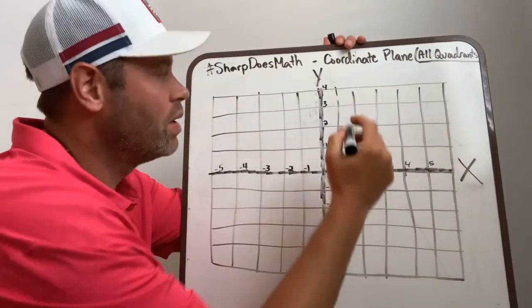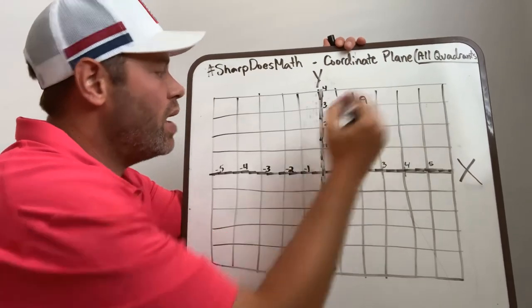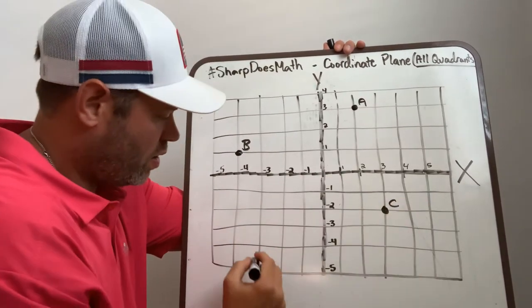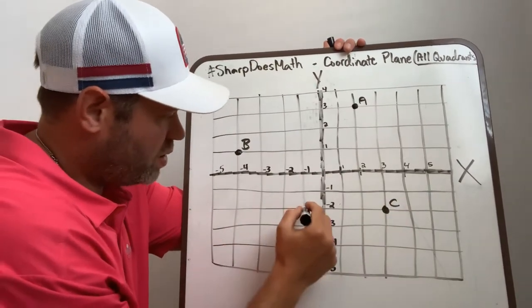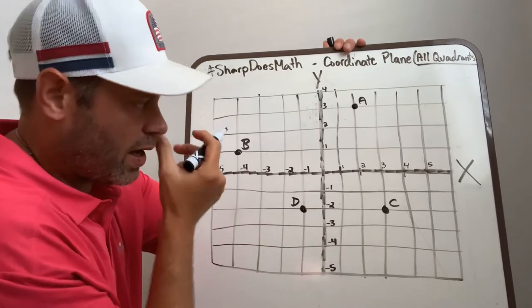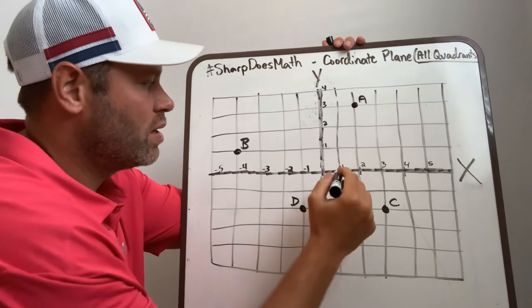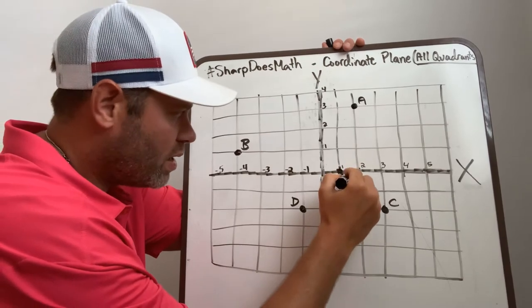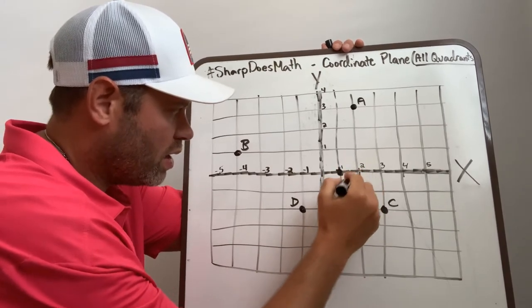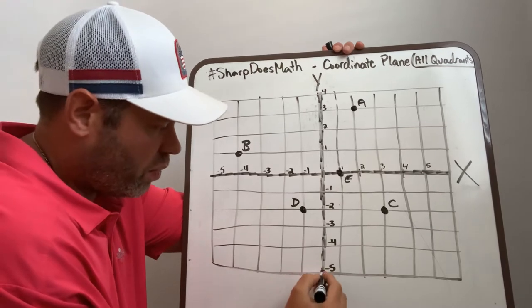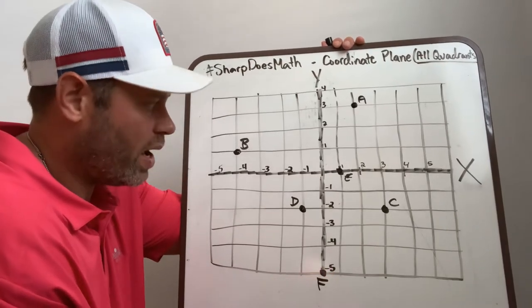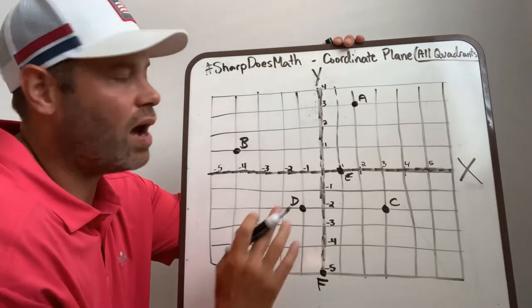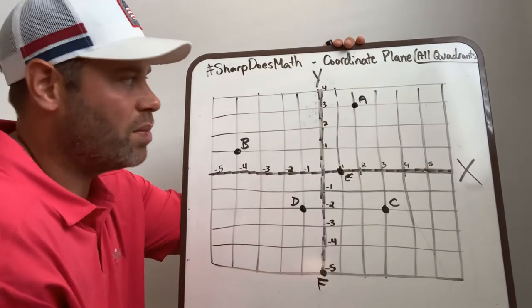I'm going to mark random spots on here. I'll make this one A, B over here, C there, D here. I want to make sure I get a couple on the x and y-axis, so E right there and F all the way down here on the y-axis. I'm going to show you how to get to these points and how we would properly write them.